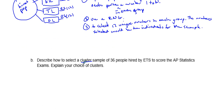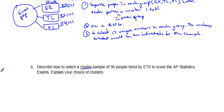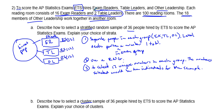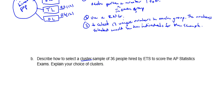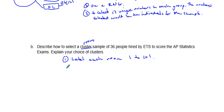For the cluster sample, we actually have reading rooms available as natural clusters. Each room has 18 people — 16 exam readers and 2 table leaders. Since all rooms have the same number of people, we can use the reading rooms as our clusters. We would label each room from 1 to 101, since there are 100 reading rooms plus one room for the other leadership.